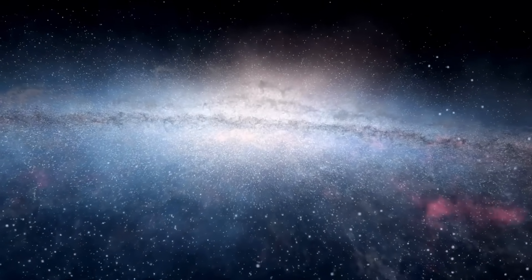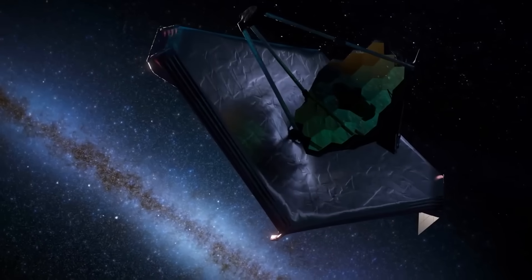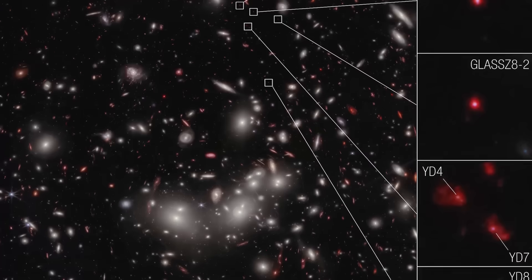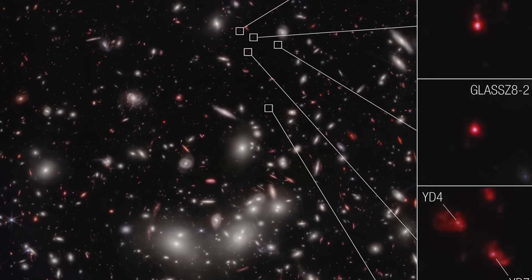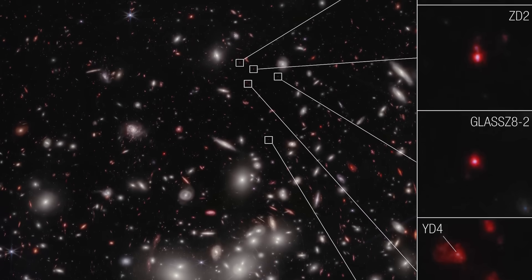However, one of these discoveries has left scientists puzzled and questioning their assumptions. During the early observation campaign of the James Webb Space Telescope, a captivating image was taken featuring seven new galaxies. These galaxies are almost as enormous as the Milky Way, filled with mature stars and dispersed throughout the image.